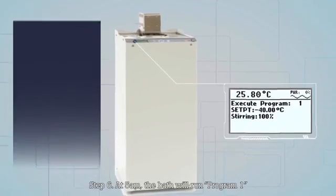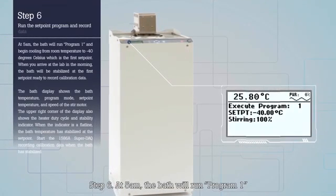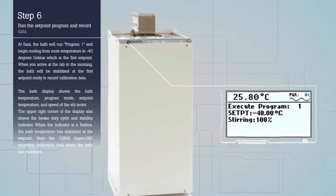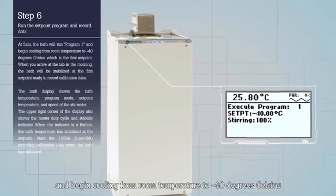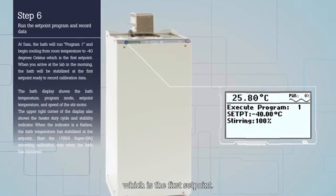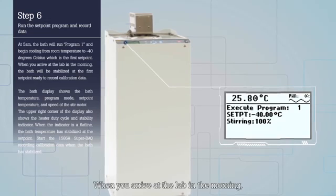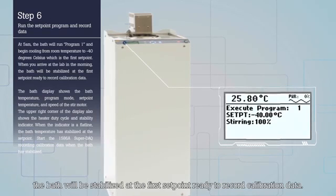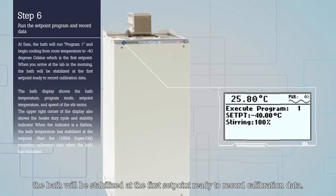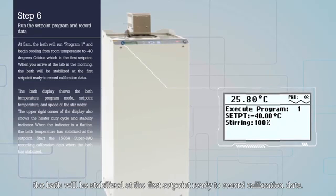Step 6: At 5 a.m. the bath will run Program 1 and begin cooling from room temperature to minus 40 degrees Celsius which is the first set point. When you arrive at the lab in the morning, the bath will be stabilized at the first set point ready to record calibration data.